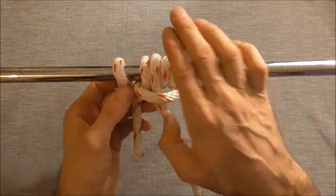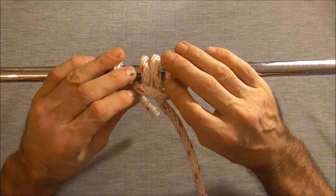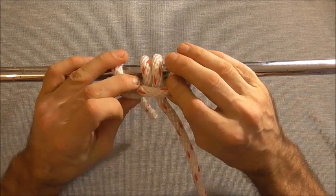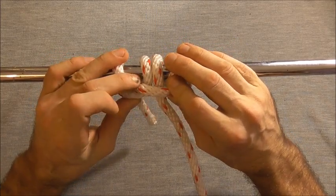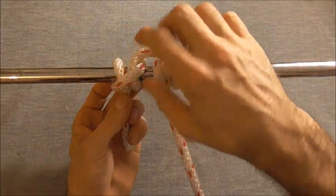So if we look at this section here, just in here, that is a lark's head or cow hitch, and if we look at this section here, just this bit here, that's just a clove hitch.